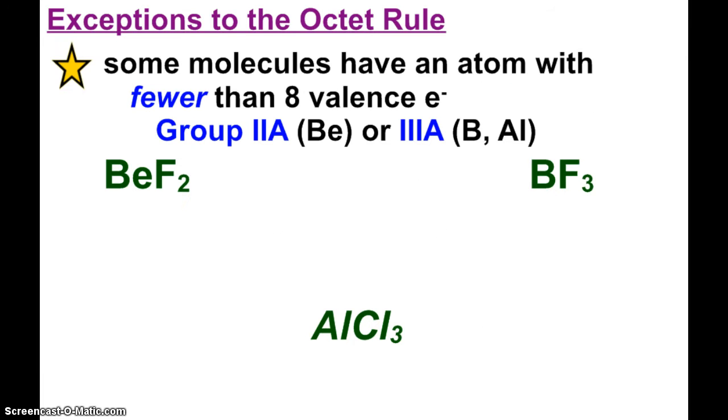All right, so of course, there's going to be exceptions to the octet rule. And some molecules have an atom that has fewer than 8 valence electrons. Pretty common with group 2A, especially beryllium, and group 3A, boron. Those are such teeny tiny little atoms that some people like to say they're almost too small to have a full octet. Aluminum will also participate in this a little bit.